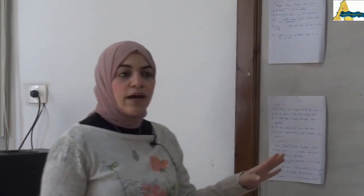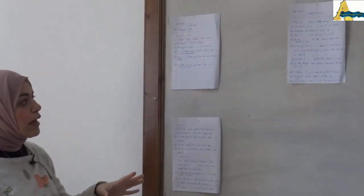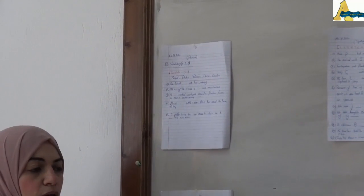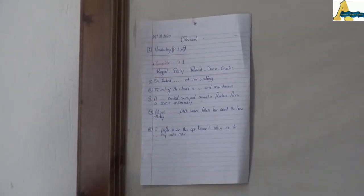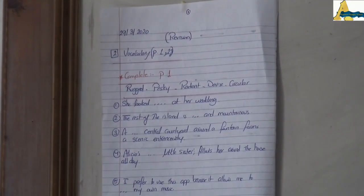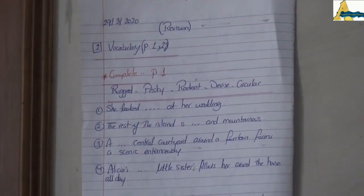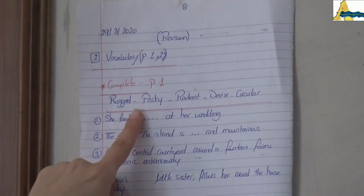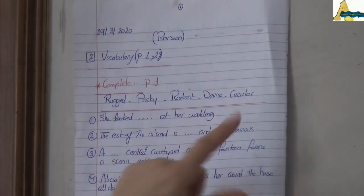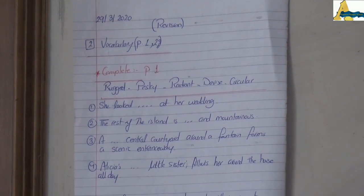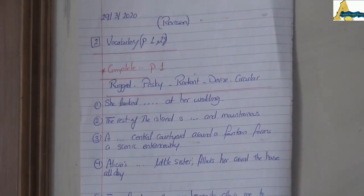This is all for grammar. Welcome back. Now let us revise a part of vocabulary. You will find all these exercises in your revision booklet — the first one on page one. You have the words: rugged, pesky, radiant, devised, and circular. Rugged is an adjective meaning rough, uneven, or unsmooth. Pesky is an adjective meaning annoying.